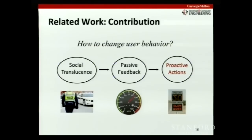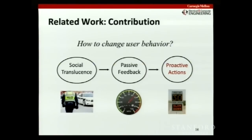We wondered if we could provide proactive actions, because these have been shown to be even more successful at getting users to change their behavior. To compare using a social speeding analogy: social translucence is like the police and judicial system, giving accountability. Passive feedback is like the speedometer — you know how fast you're going and modulate your actions. Proactive actions, shown to be most successful, are like the radar gun flashing your speed. Can we use this insight when building Cameo?